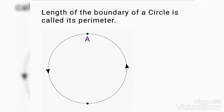For example, in this circle, the boundary of the circle is black in color. So, the length of this black boundary is the perimeter of this circle.